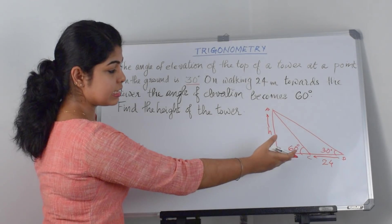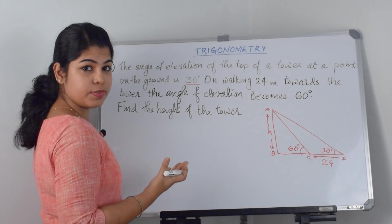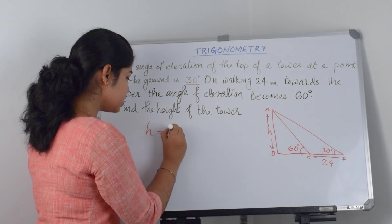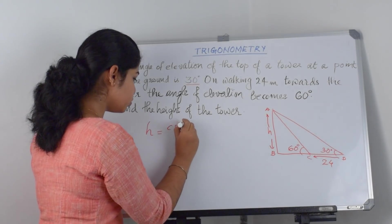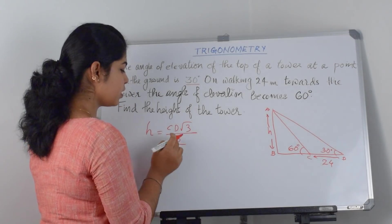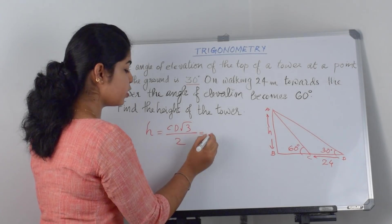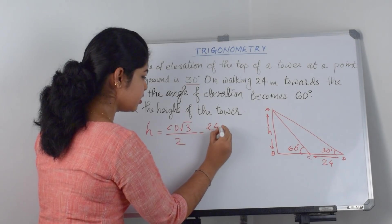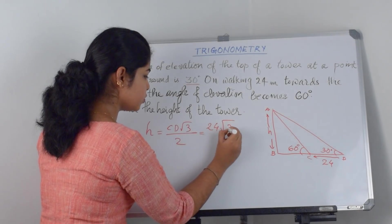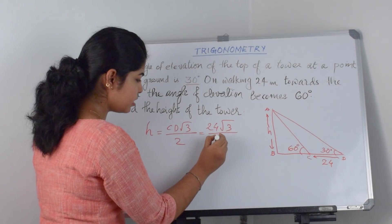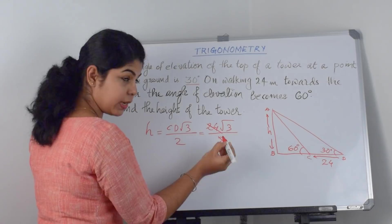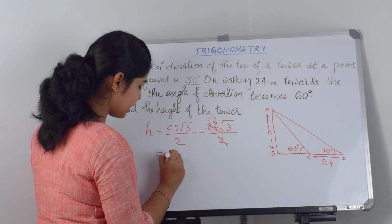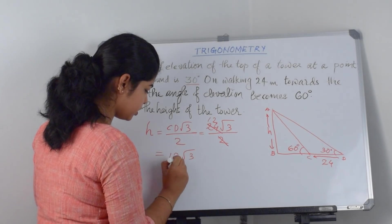So how can we find the height? The angles are 60 degrees and 30 degrees. For that we know the formula: h is equal to cd times root 3 over 2. Here the value of cd is 24, so substituting: 24 root 3 over 2. We can cancel 2 into 24, giving 12. So the final answer will be 12 root 3.